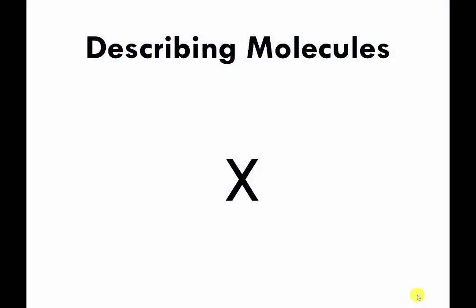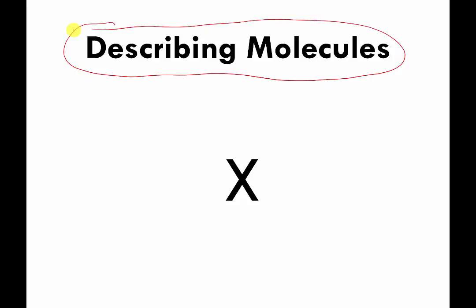This should be a relatively short video, but it's important to get this information under your belt before we move forward. I want to talk about describing atoms and molecules, and using the symbols for atoms to describe molecules to other people. This capital letter X here is a generic symbol — there's no element with symbol X, I'm just using that as a placeholder.